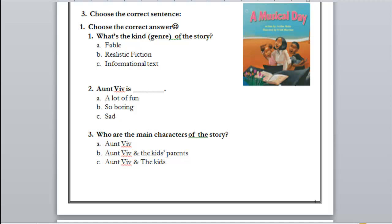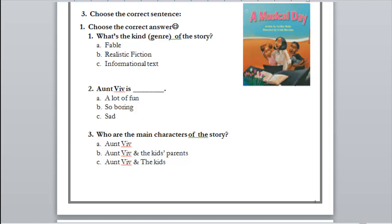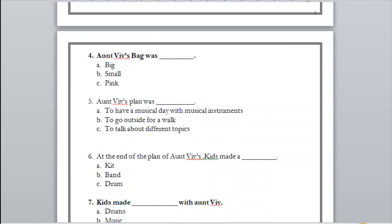Now let's get to number three: who are the main characters of the story — Aunt Vive, Aunt Vive and the kids' parents, or Aunt Vive and the kids? Yes, exactly — Aunt Vive and the kids. Now let's get to number four: Aunt Vive's bag was big, small, or pink?